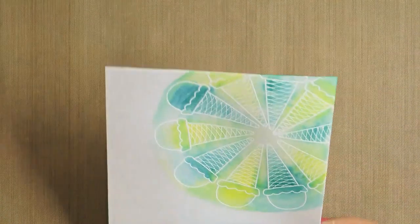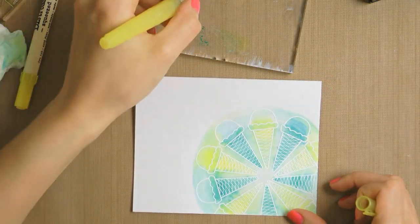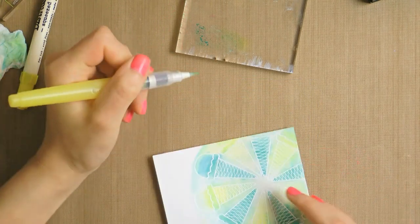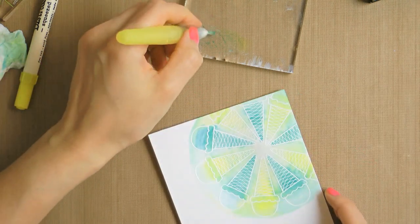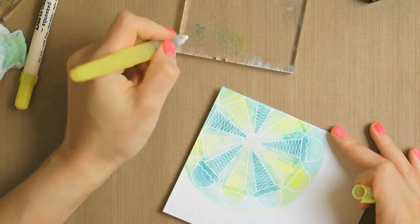I then came back with a water brush and a mix of peacock feathers and squeezed lemonade and colored in some of the areas of the ice cream. I did mix the colors on a clear block and picked a mixture from there using a water brush.